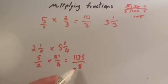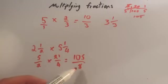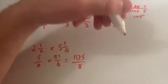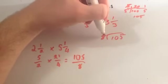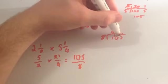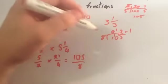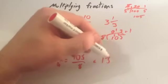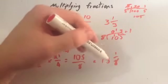So I get 105 over eight as my answer. This is a top-heavy fraction, so I want to change it into a mixed number. I'm going to see how many eights go into 105 using short division. Eight doesn't go into one — remainder one. Eight into ten goes once, remainder two. Eight into twenty-five goes three times, remainder one. So eight goes into 105 thirteen times remainder one. The remainder goes on top and eight stays on the bottom, so the answer is thirteen and one-eighth.